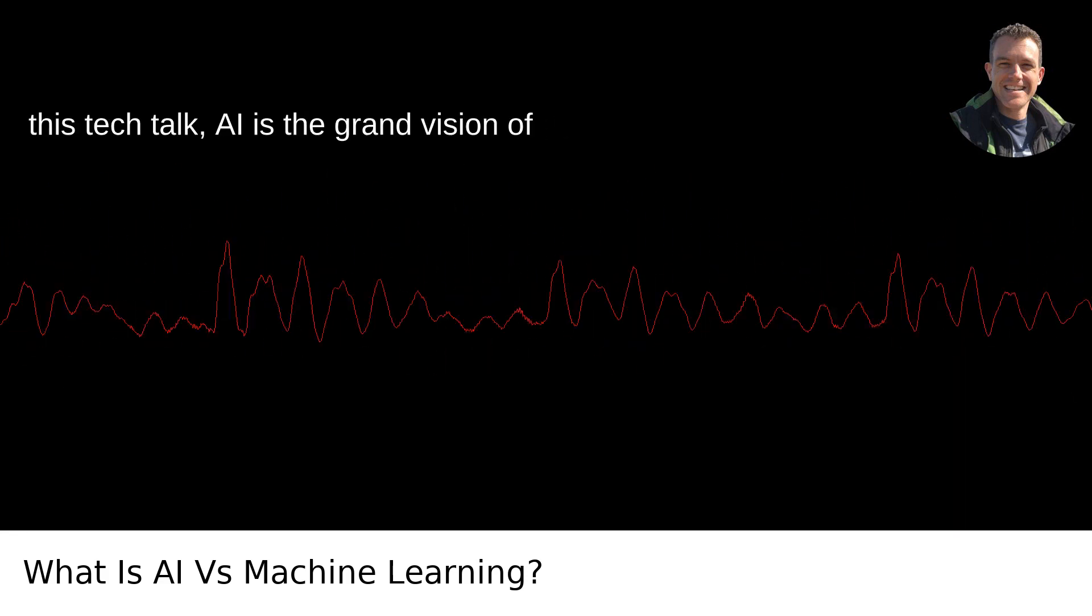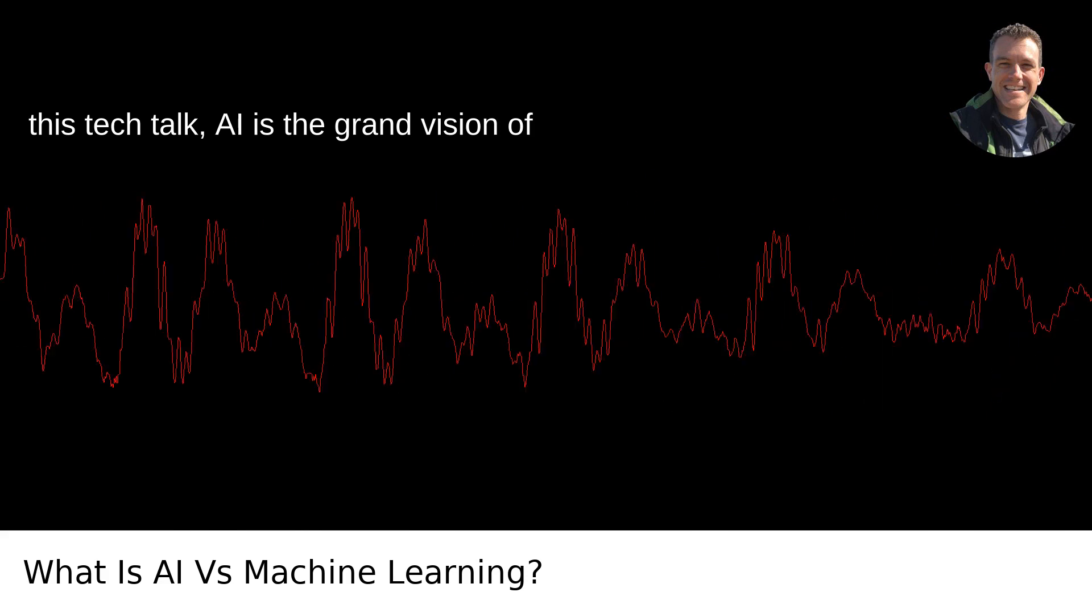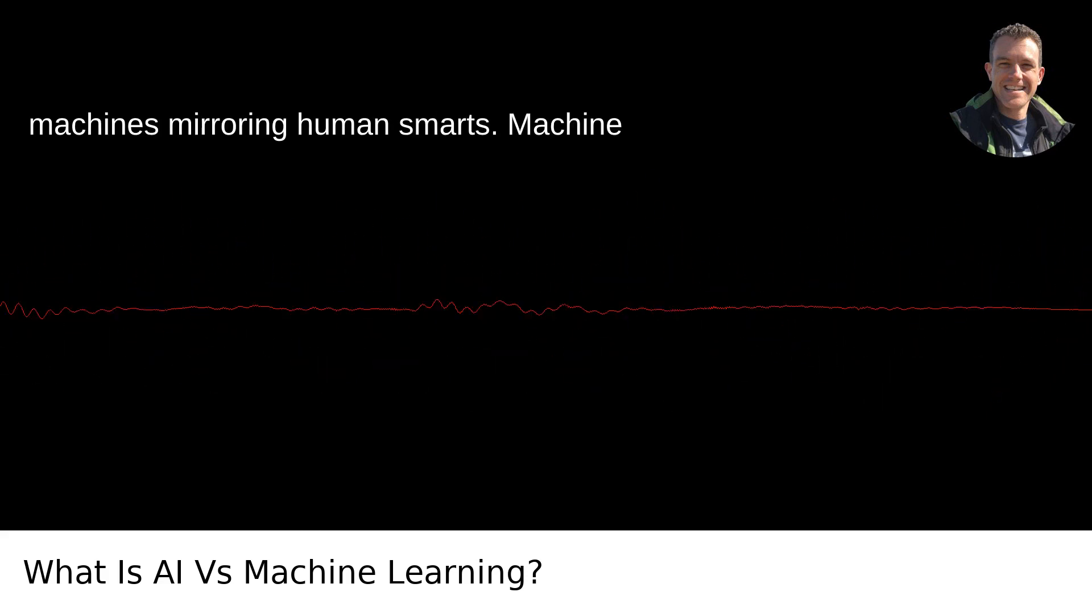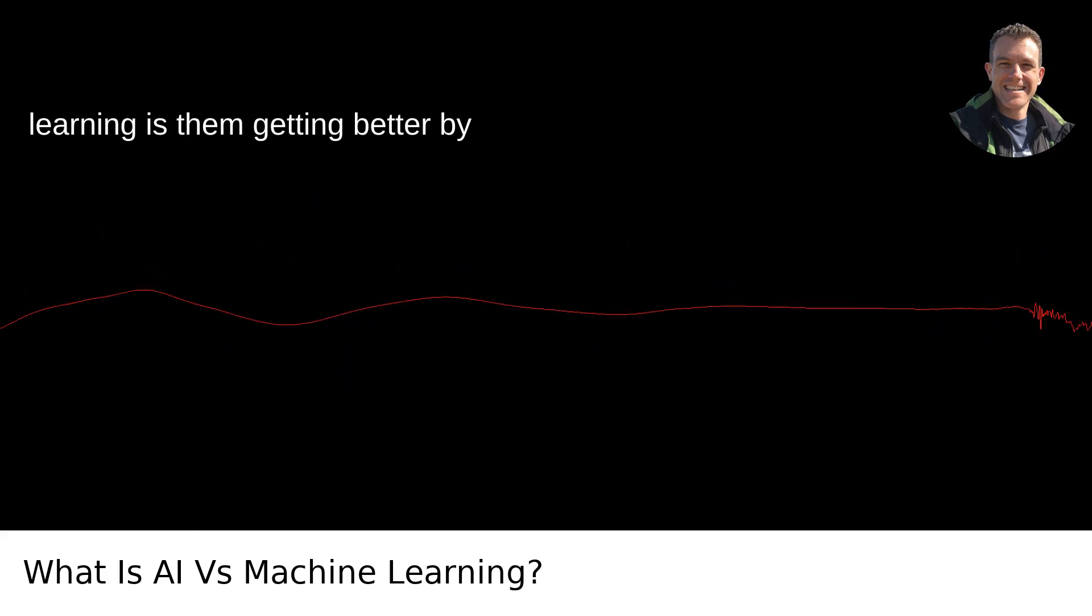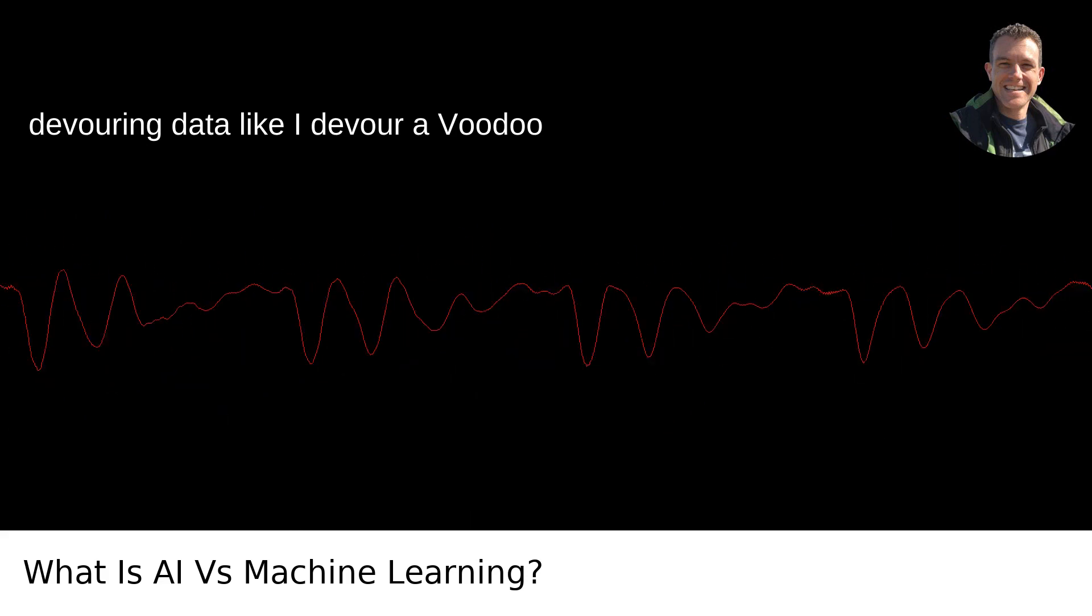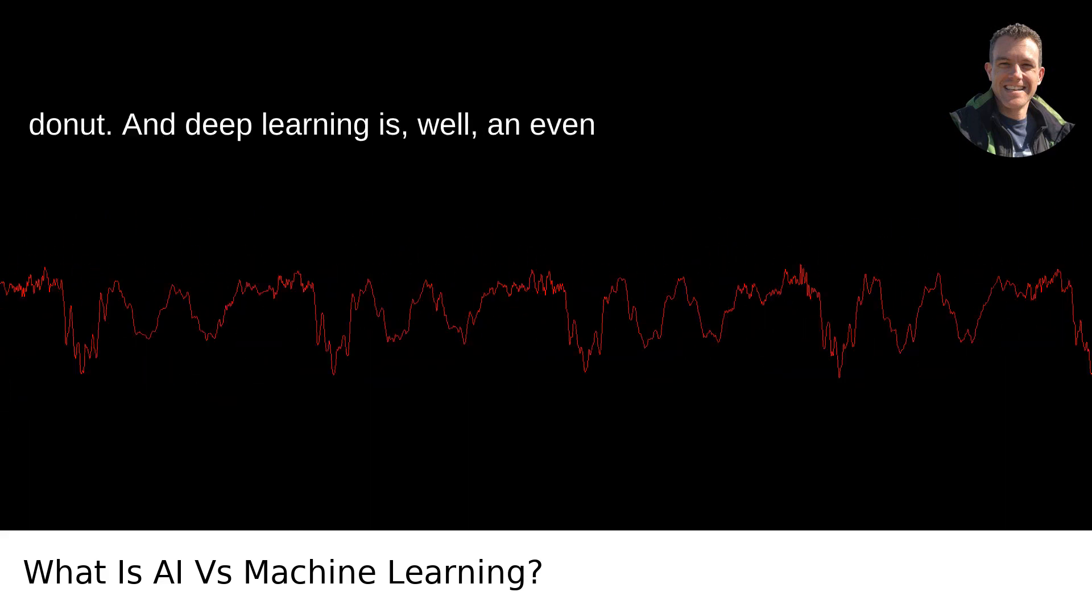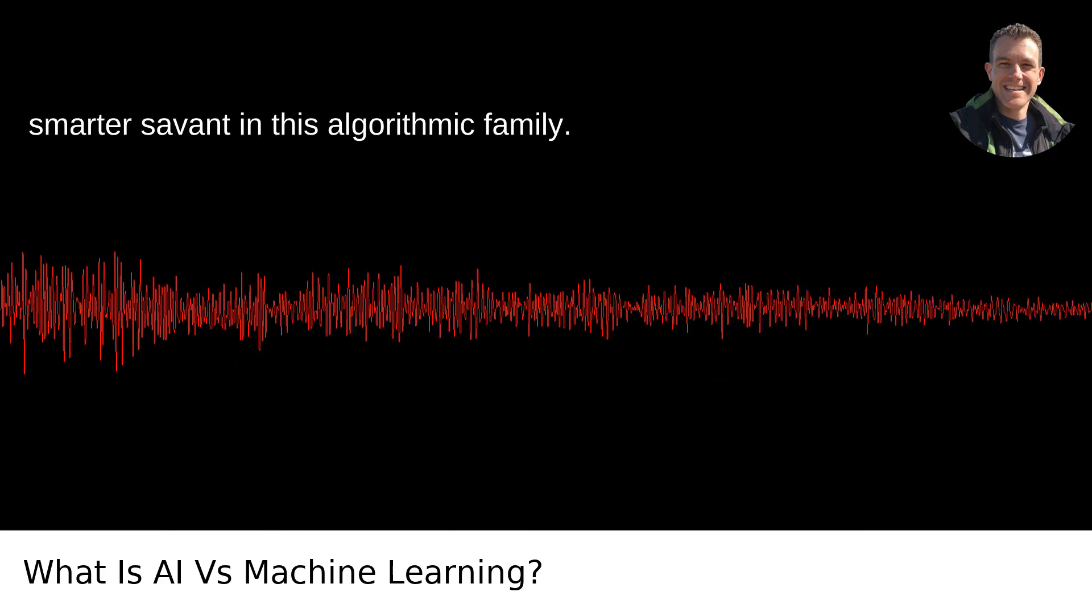So, wrapping up this tech talk, AI is the grand vision of machines mirroring human smarts. Machine learning is them getting better by devouring data like I devour a voodoo donut. And deep learning is, well, an even smarter savant in this algorithmic family.